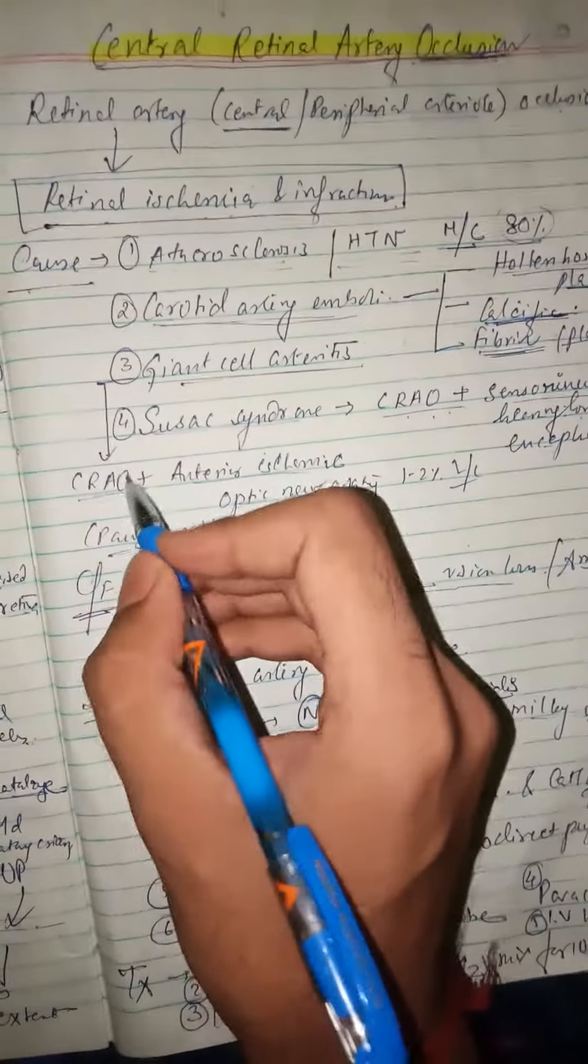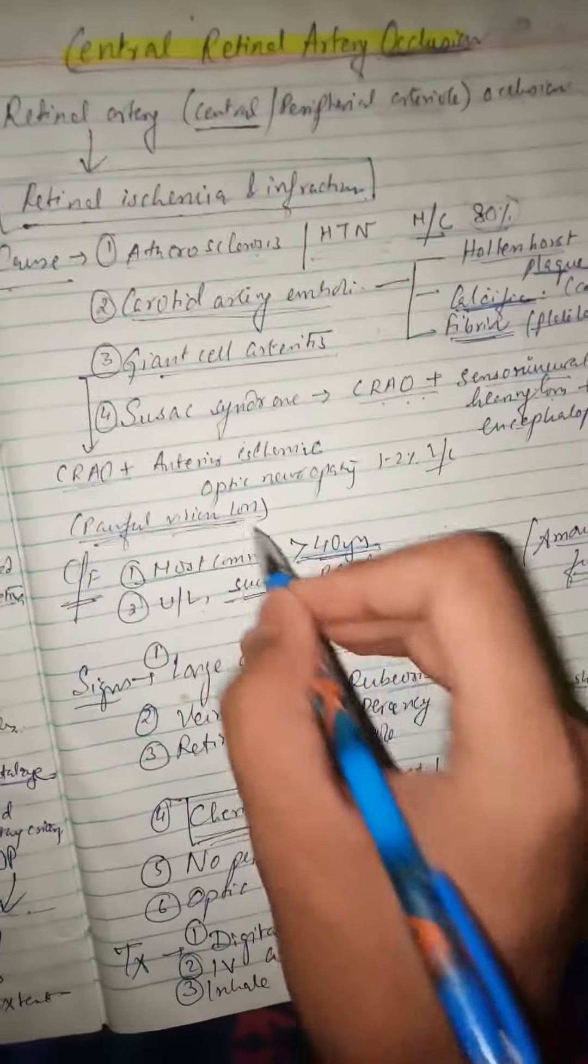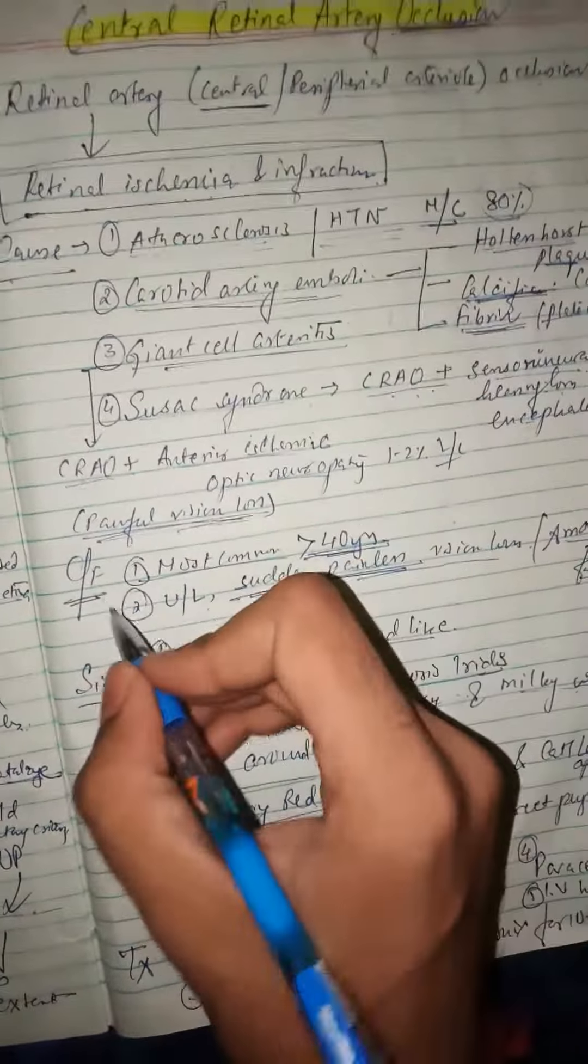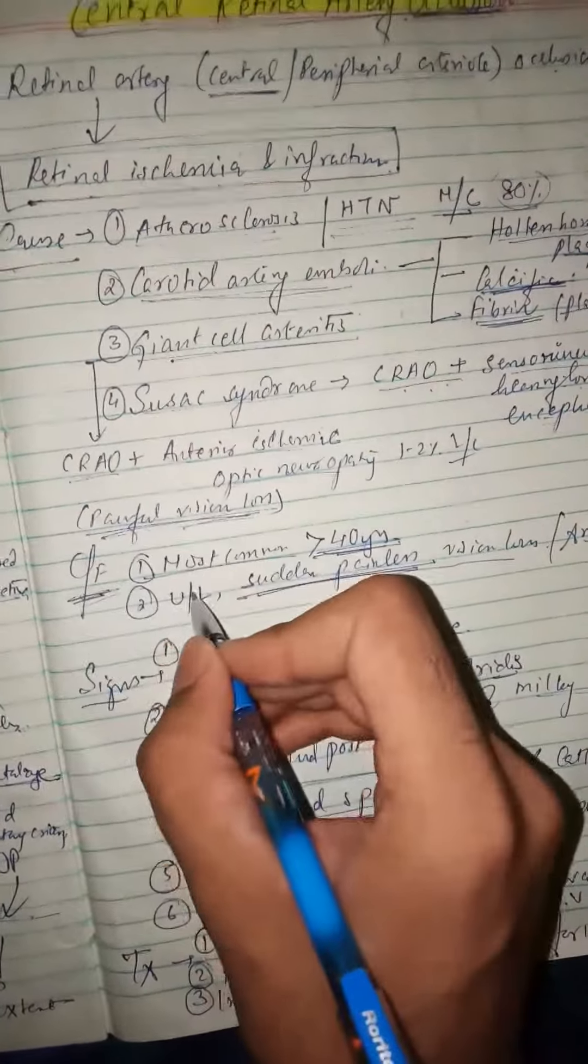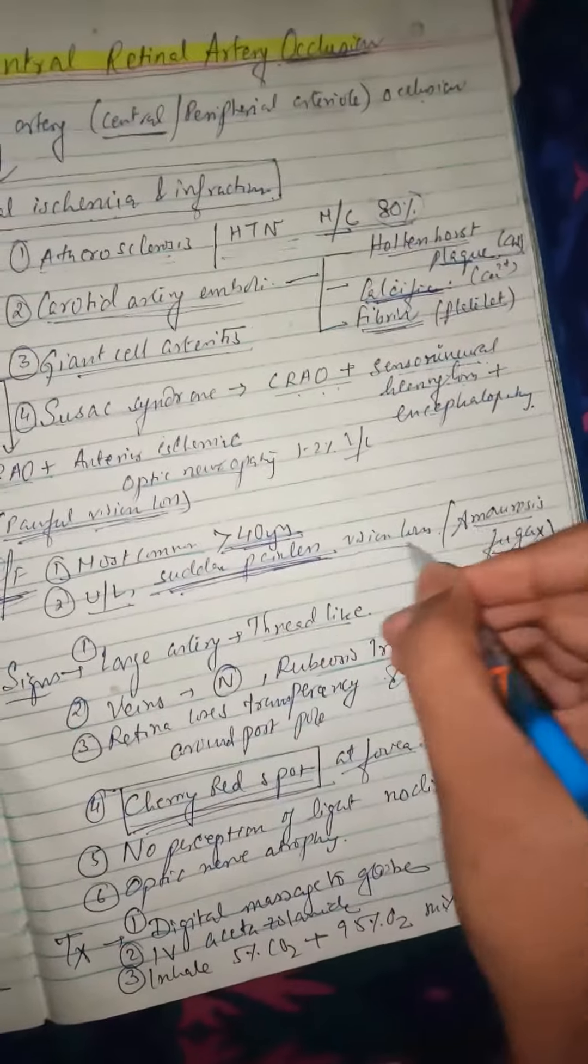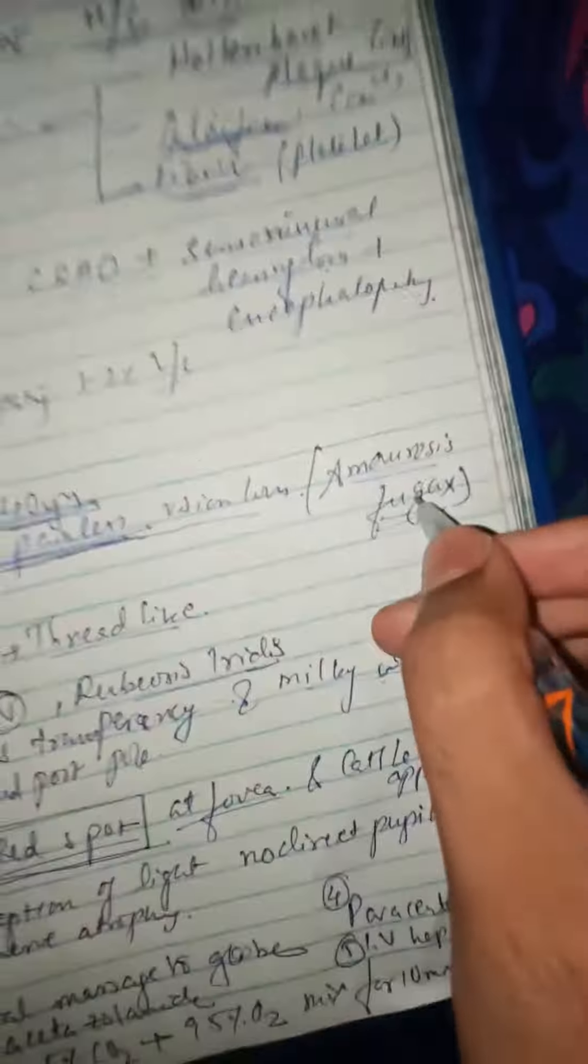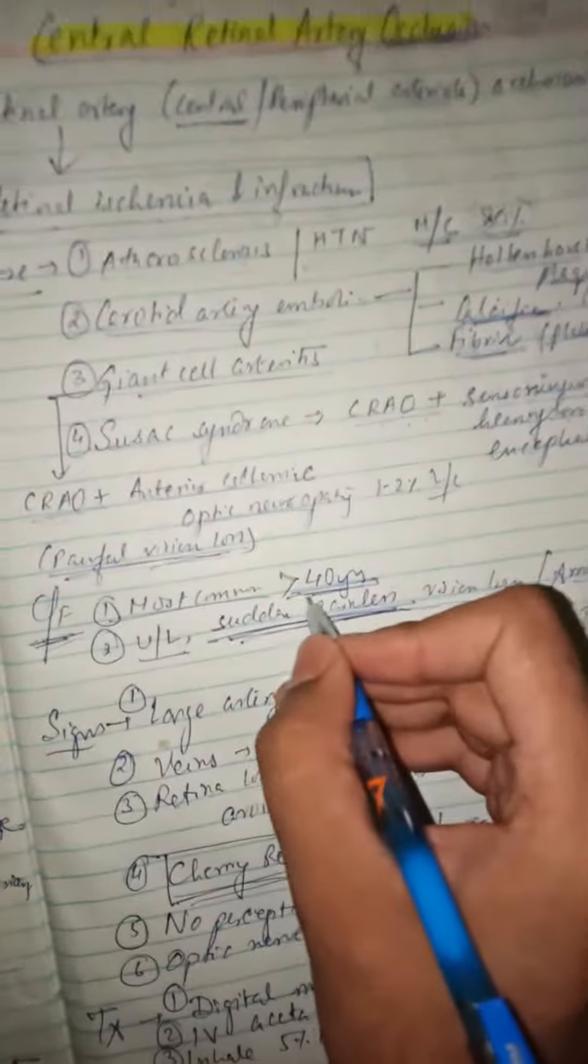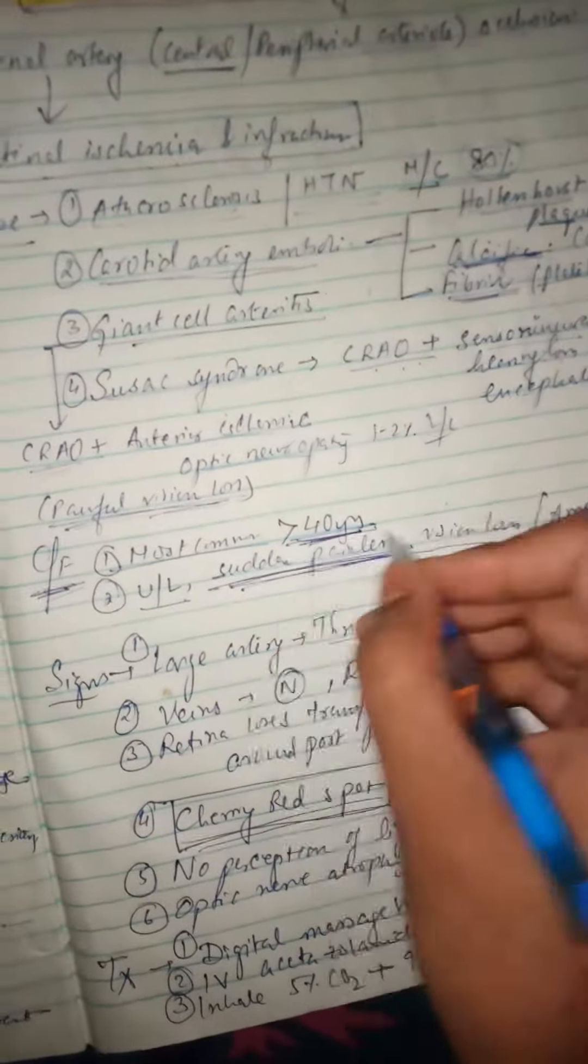In giant cell arteritis, there is painful loss of vision. But normally in CRAO, the clinical feature is sudden painless loss of vision—unilateral sudden painless loss of vision known as amaurosis fugax. It is most commonly seen in patients greater than 40 years of age.